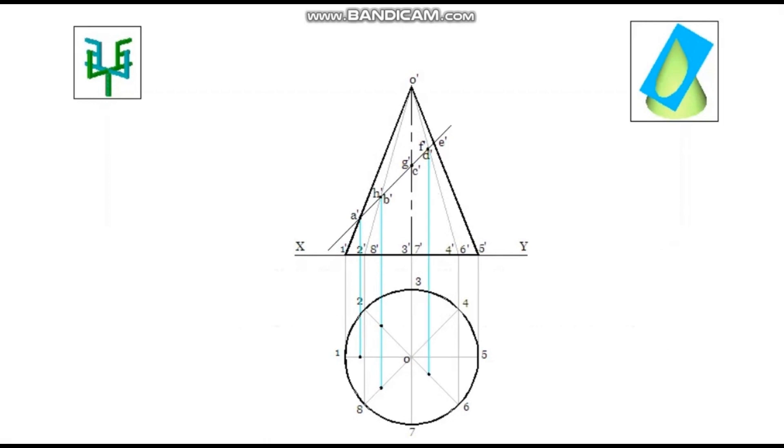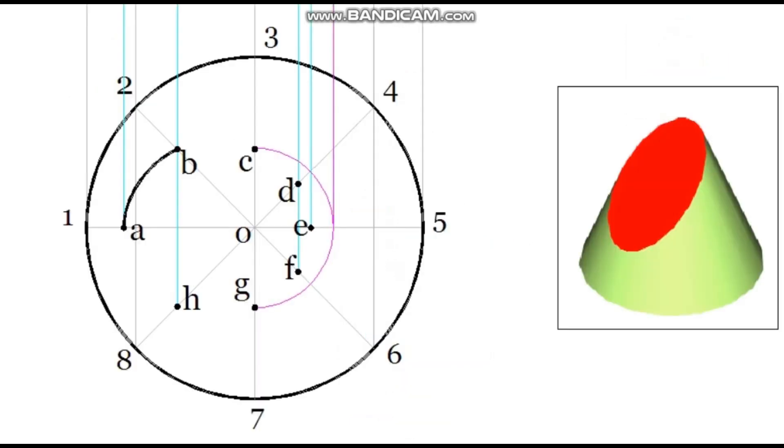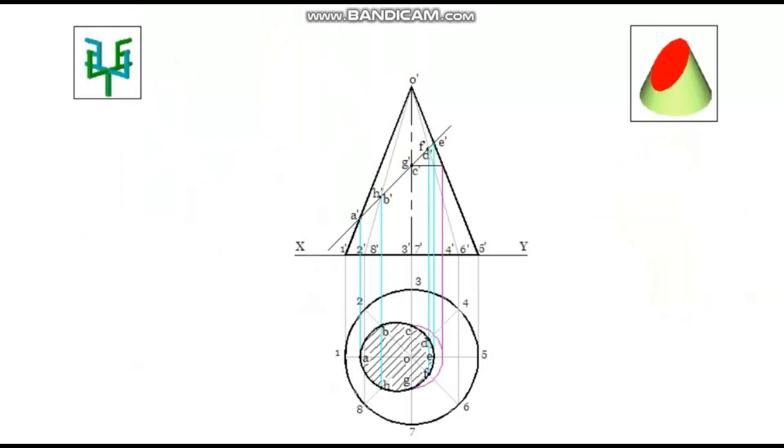Points on the axis, C dash and G dash cannot project directly. These points are initially taken to the generator horizontally. Then it is projected to the corresponding line of the plan. Then this distance is taken back to the actual lines by cutting arc. Name the corresponding intersection points of the plan. Join these points with a smooth curve. Draw sectional lines or hatching lines in this closed area.